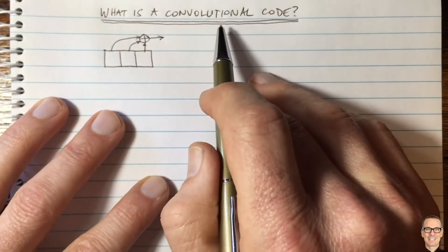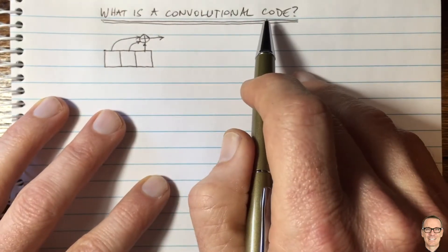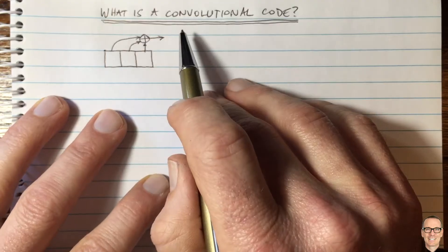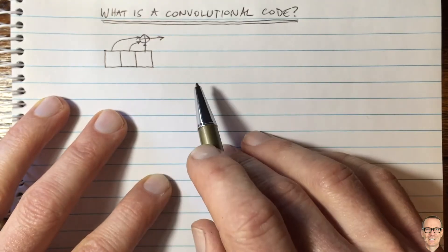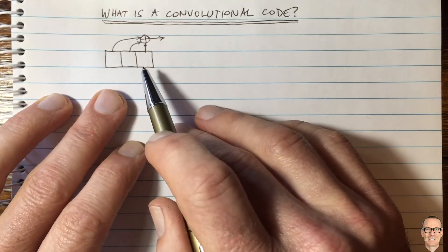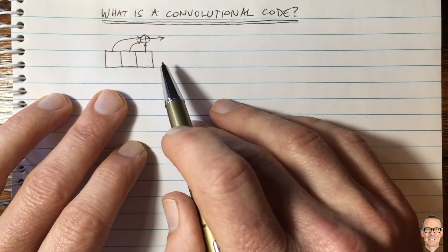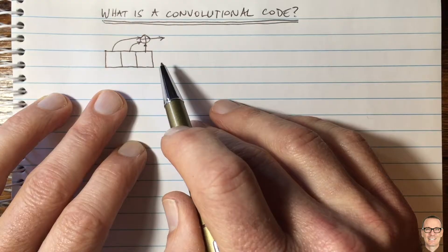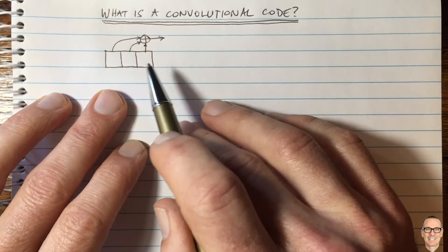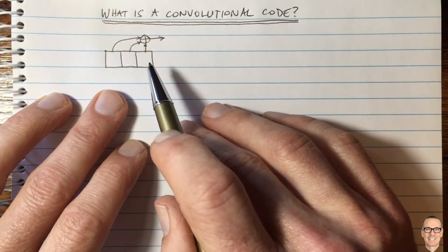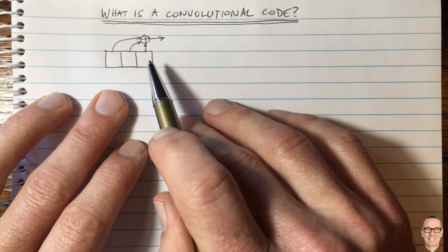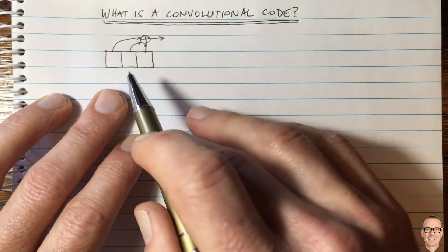So what is a convolutional code? This is a form of error correction coding, and in order to correct for errors in a data sequence, that sequence needs to have structure or memory between the bits.